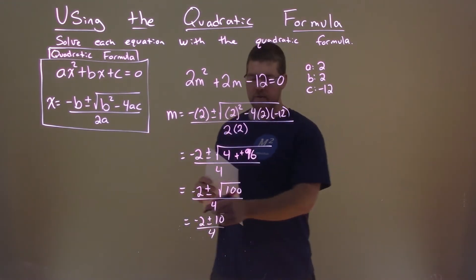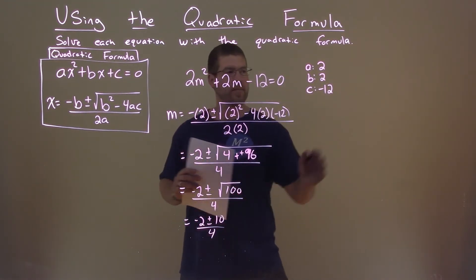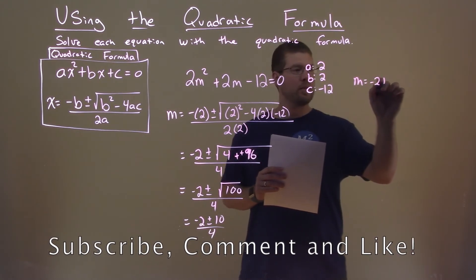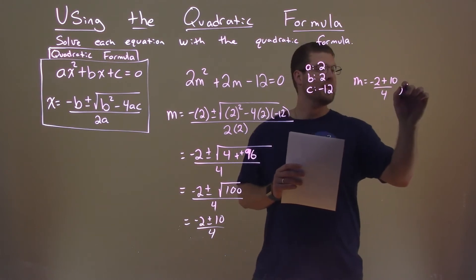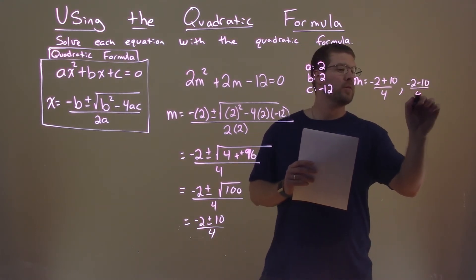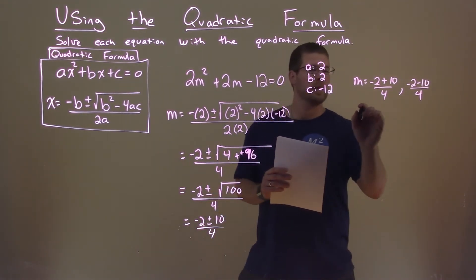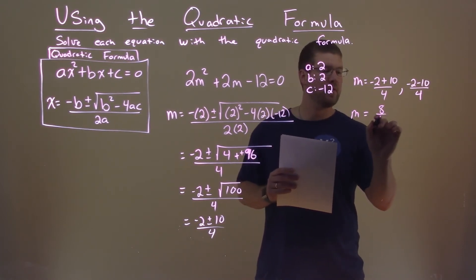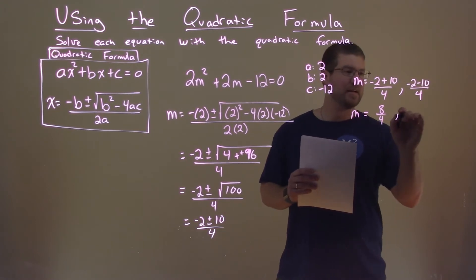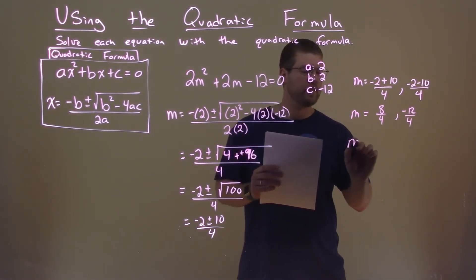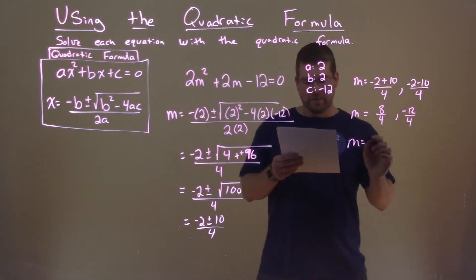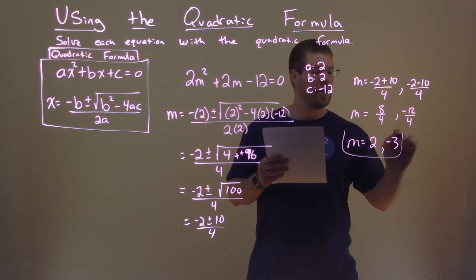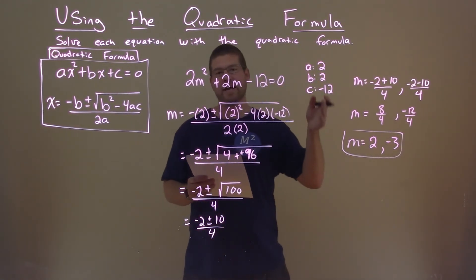So now we're going to break that down. We have negative 2 plus or minus 10 all over 4. So our m value equals negative 2 plus 10 over 4, and negative 2 minus 10 over 4. Negative 2 plus 10 is positive 8 over 4. Negative 2 minus 10 is negative 12 over 4. Simplifying: 8 divided by 4 is 2, and negative 12 divided by 4 is negative 3. So my two values for m are 2 and negative 3.